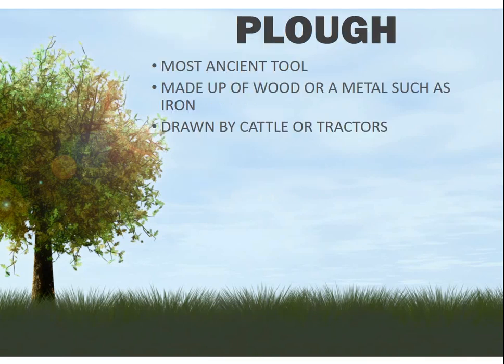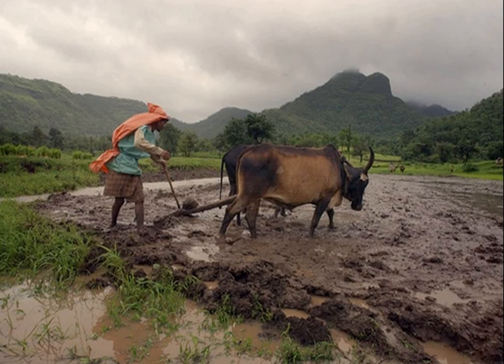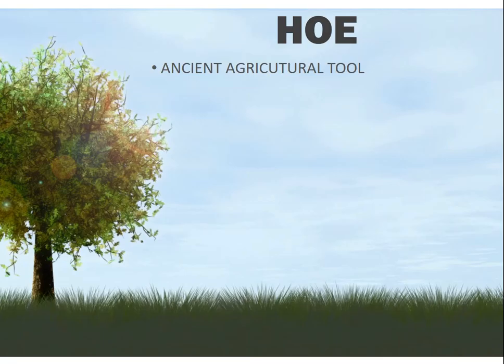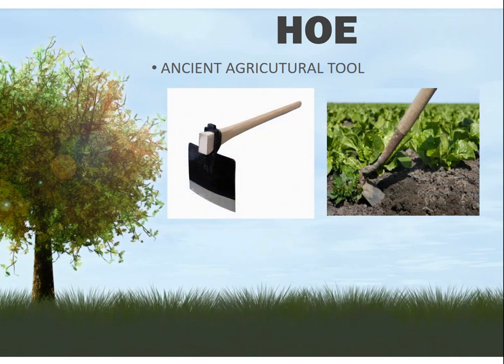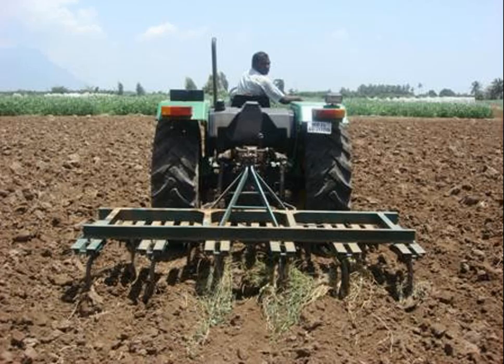The plow is the most ancient tool, made up of wood or a metal such as iron. It is drawn by cattle or tractors. Here you can see a simple plow drawn by cattle and tractors. The hoe is also an ancient agricultural tool. The cultivator is a modern tool for plowing — it is expensive but saves time and labor, and is drawn by tractors. Here you can see a picture of a cultivator.